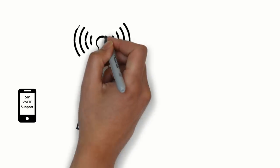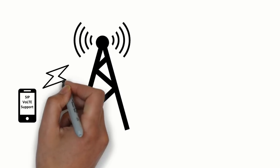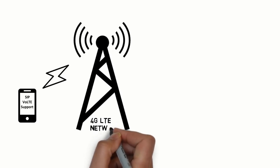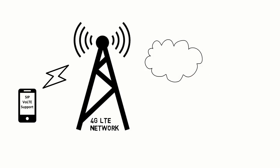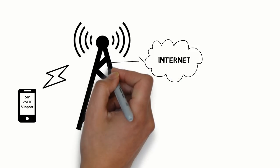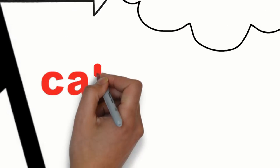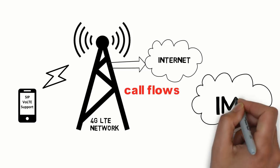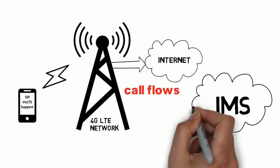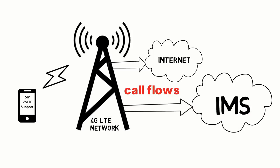This is an IMS registration call flow video. A mobile handset needs to first latch on to the LTE network, and thereafter IMS registration is done. Only after IMS registration can a user make MO or MT calls on the VoLTE network. This video focuses on call flows for VoLTE UE attach and SIP IMS registration, which is a crisp extract from 3GPP and GSMA documents.